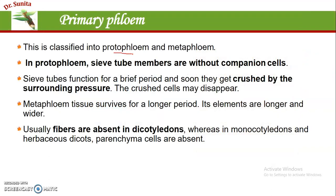Primary phloem is divided into two types: protophloem and metaphloem. In protophloem, the sieve tube members and companion cells are present. In protophloem, the sieve tube nucleus is already present.